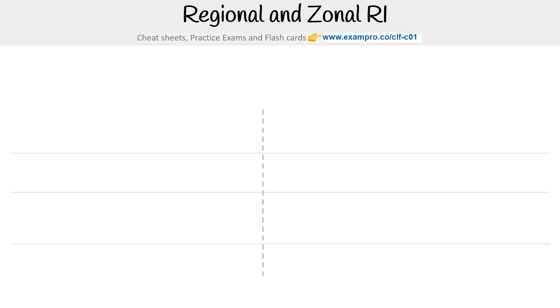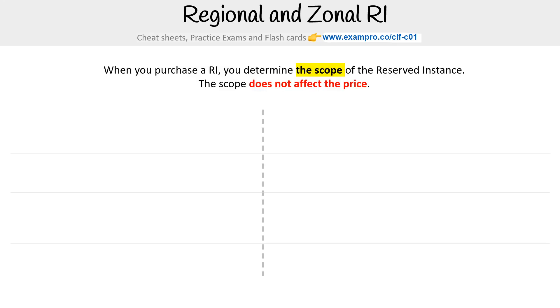Let's compare regional and zonal RI. When you purchase an RI, you have to determine the scope for it. This is not going to affect your price, but it's going to affect the flexibility of the instance — so this is something you have to decide.